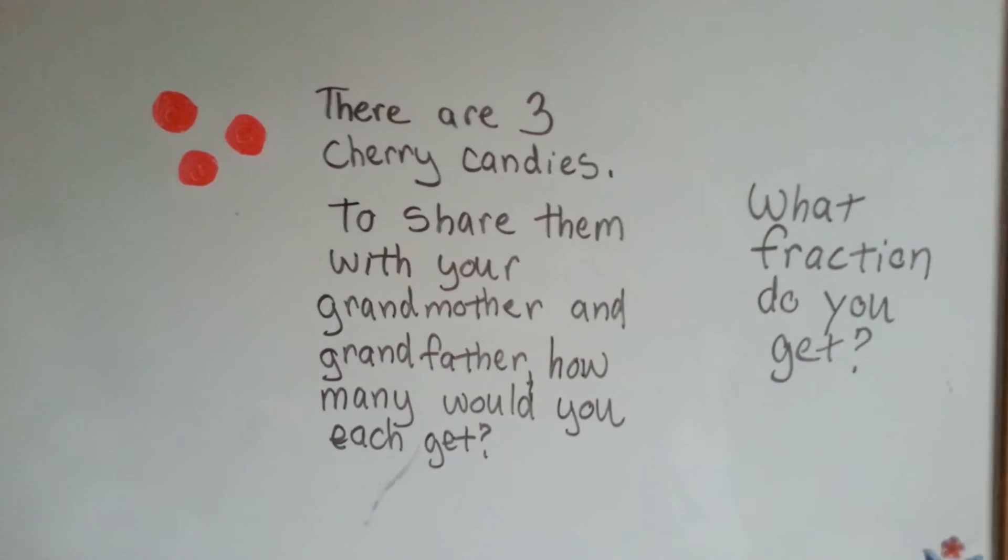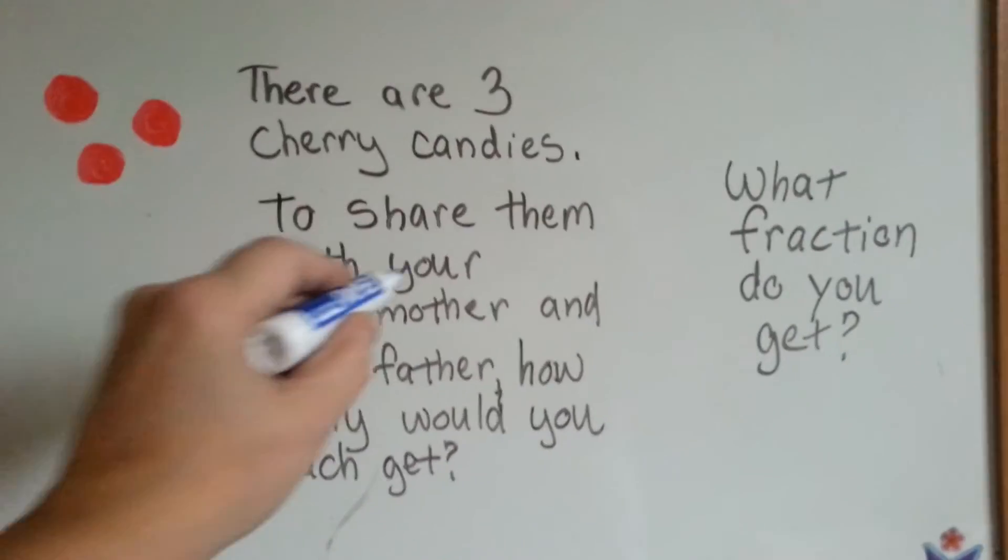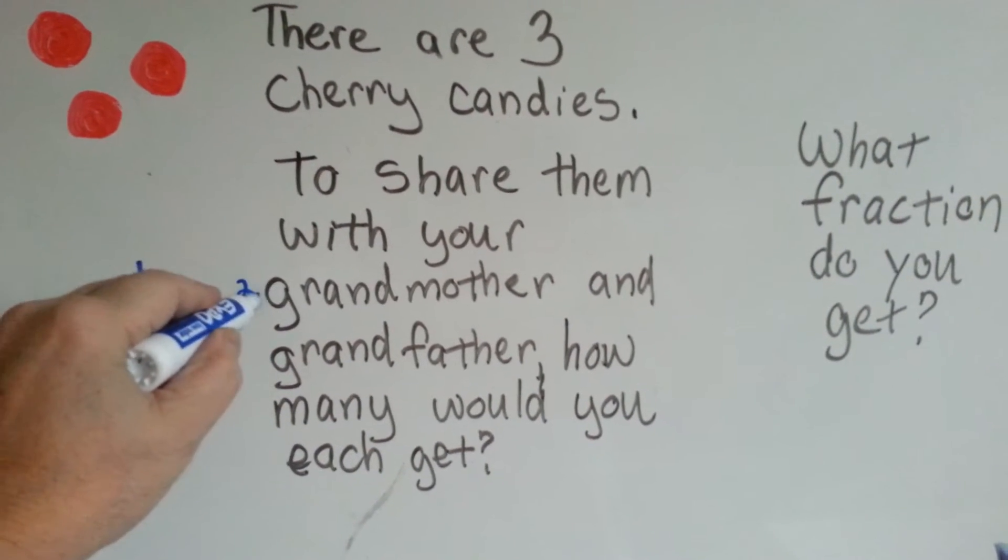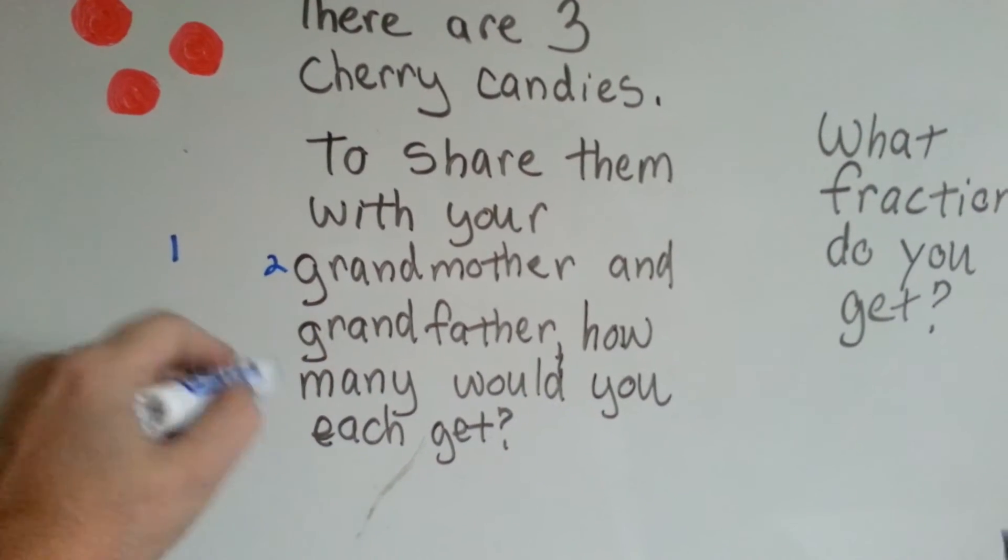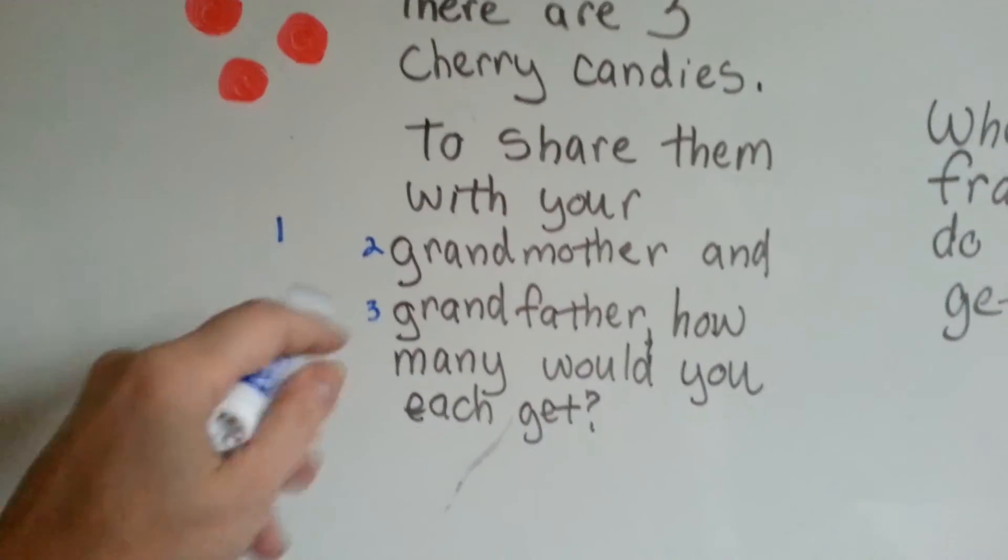There's three cherry candies and you want to share them with your grandmother and grandfather. So how many would everyone get? Well, there's you, that's one person. There's your grandmother, that's person number two. And there's your grandfather, that's person number three.